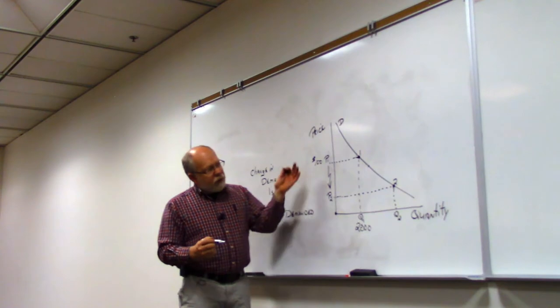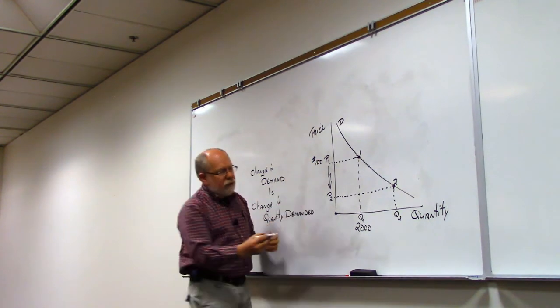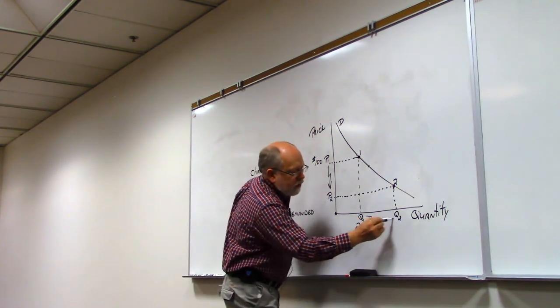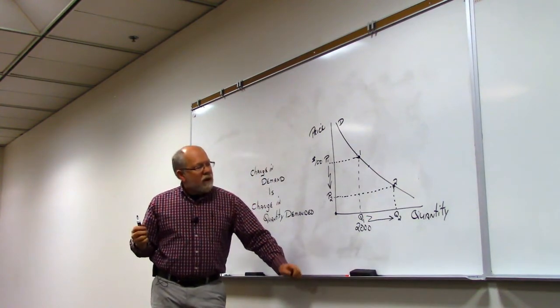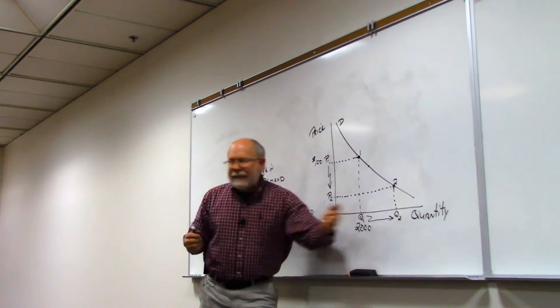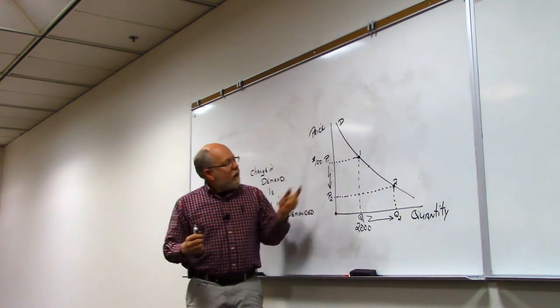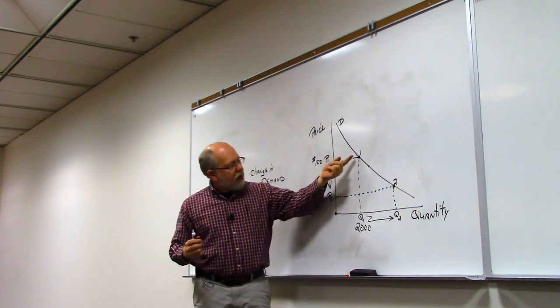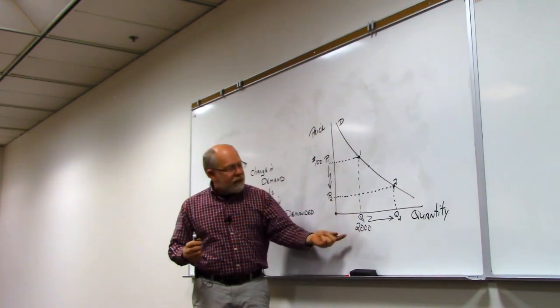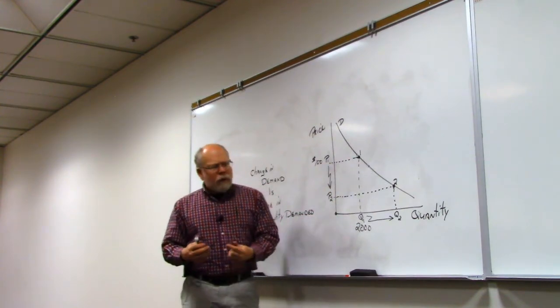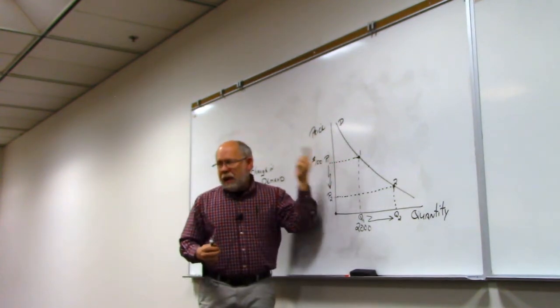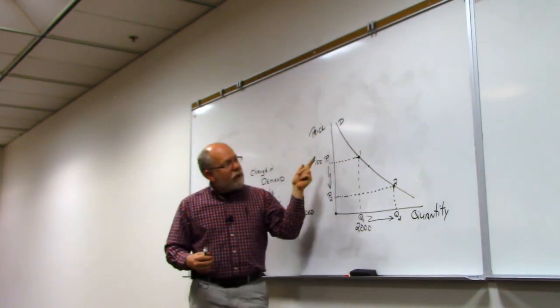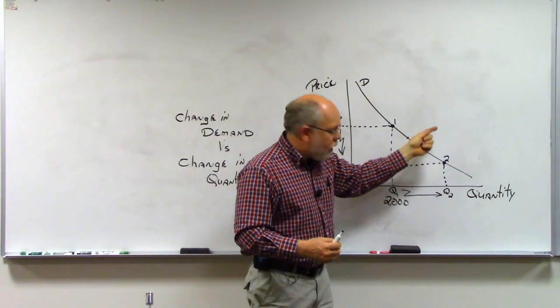So if this was a price of $100 and a quantity of 2,000 units, at point 1, we would have P1Q1, which would be $100 and 2,000 units. It has the price information in that point, and it has the quantity information in that point. If we go to a lower price, let's come down here to P2. That is a change in price.